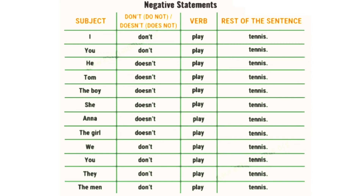'Tom doesn't play tennis.' Here, 'Tom' is the subject, 'doesn't play' is the verb, and 'tennis' is the rest of the sentence.